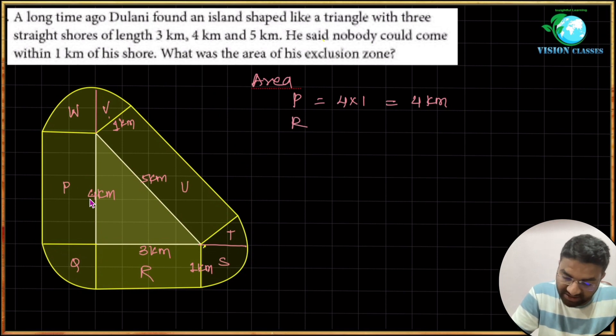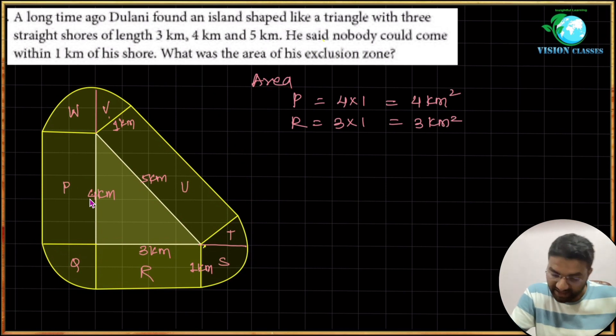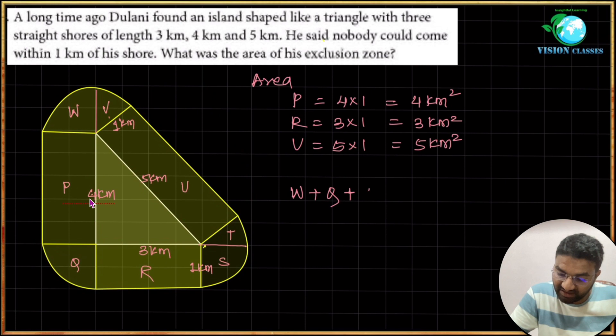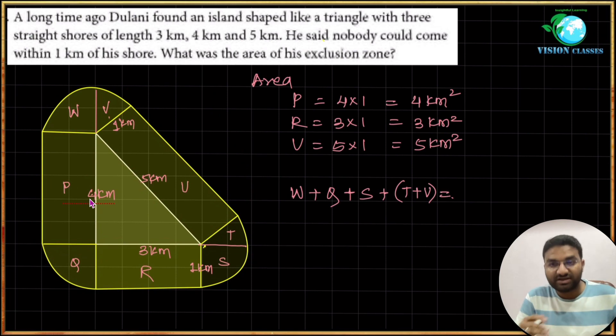Then R is equal to 3 times 1, which is 3 square kilometers. Then U is 5 times 1, which is 5 square kilometers. Got it? This much part.